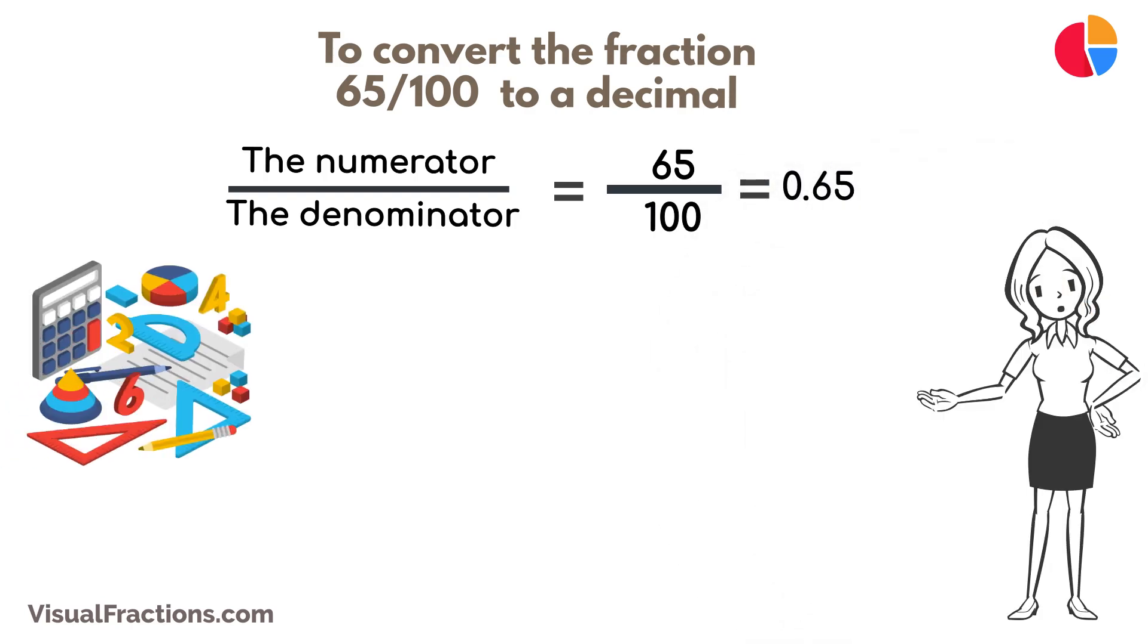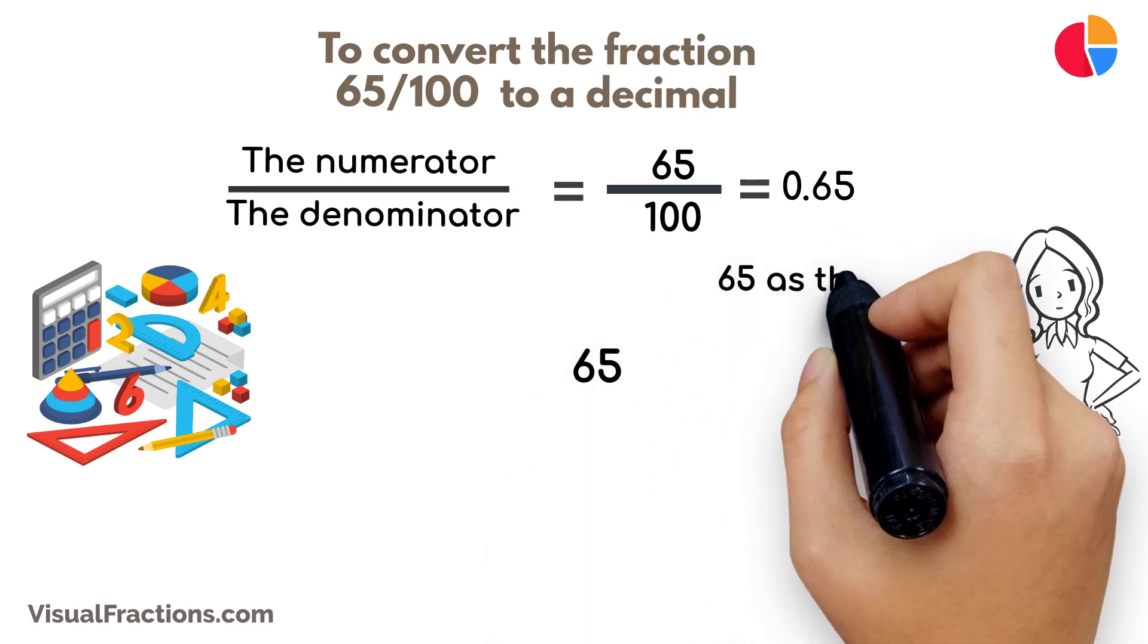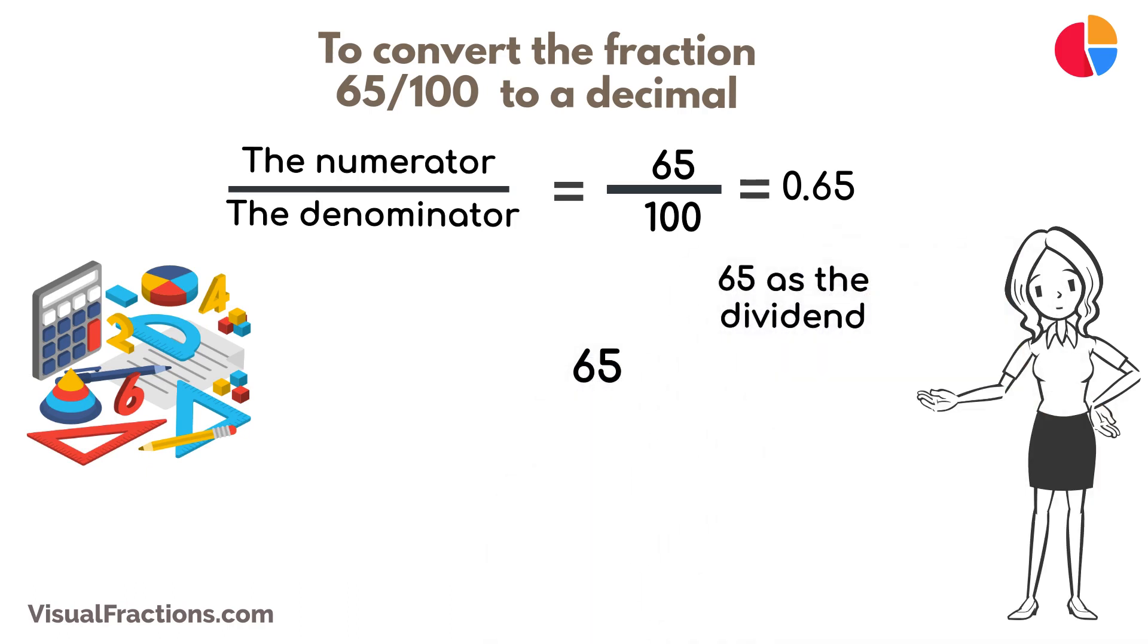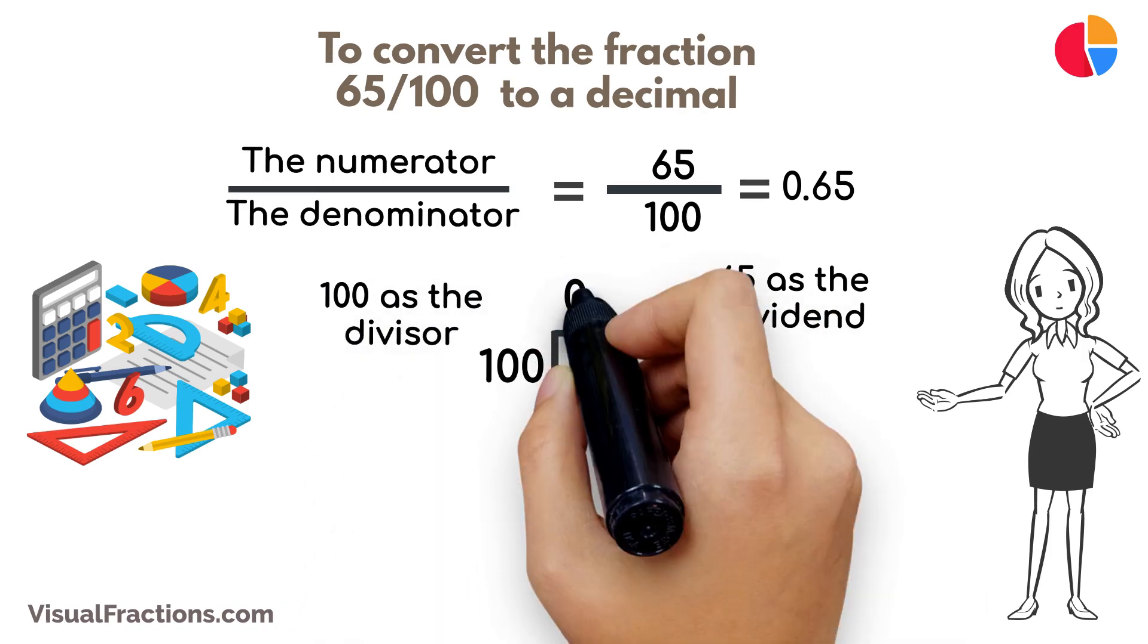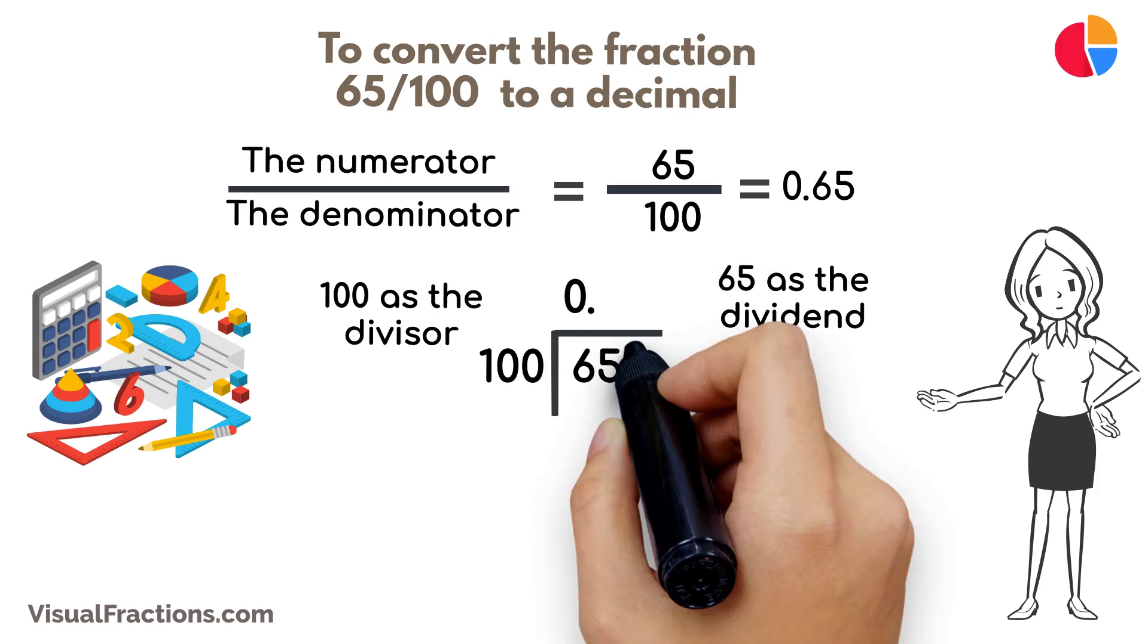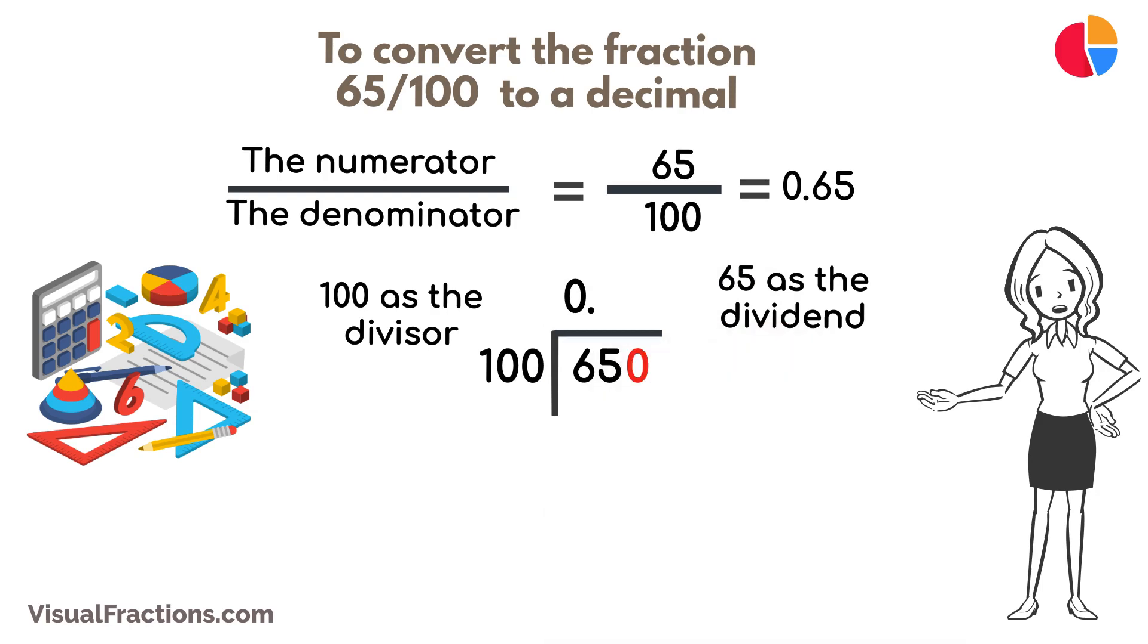To do this by hand using long division, we start by writing 65 as the dividend and 100 as the divisor. Since 100 doesn't fit into 65, we add a decimal point in our answer and append a 0 to 65, making it 650.